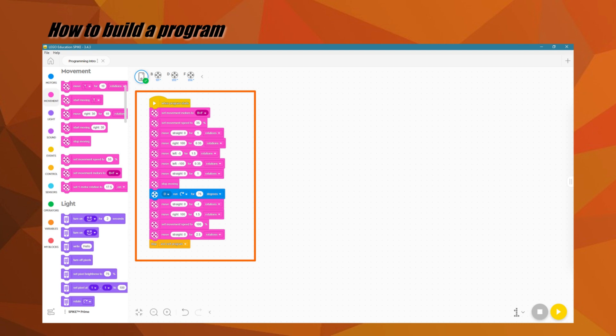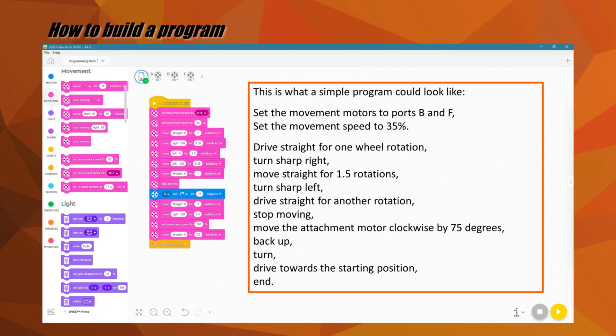The stop block from the control category is the only block shaped to be the last block in the stack or program. This is an example of what a simple program could look like. It sets the movement motors to ports B and F and the movement speed to 35%. Then the robot drives straight for one wheel rotation, turns sharp right, moves straight another 1.5 rotations, turns sharp left, continues straight for another rotation, then moves the attachment motor clockwise by 75 degrees, backs up, turns, and drives towards the starting position.